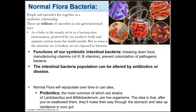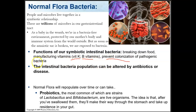The large intestine is full of normal flora, or bacteria. This is a symbiotic relationship between us and the microbes that live inside us — there are trillions of microbes in our GI tract. When you're born, you have no bacteria, but as soon as you enter the environment you start collecting them. They help us by breaking down and manufacturing vitamins like vitamin K and the B vitamins, and they help prevent colonization of pathogenic bacteria — keeping out the bad bacteria.